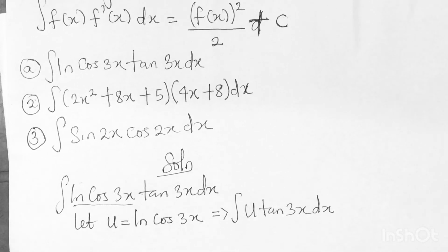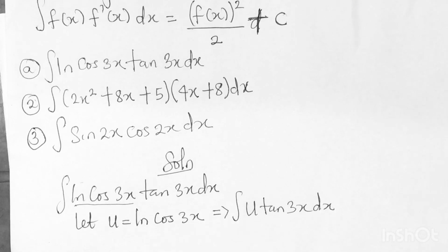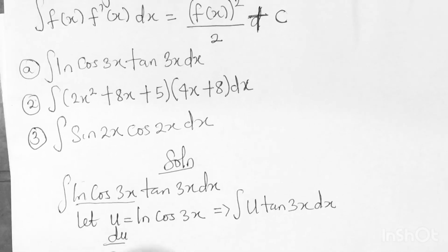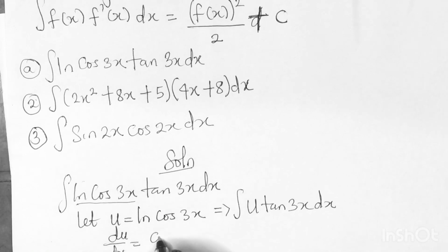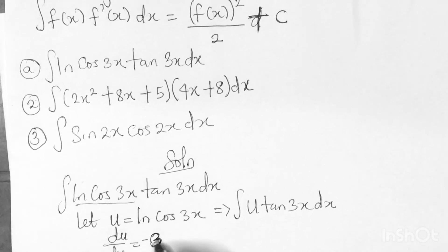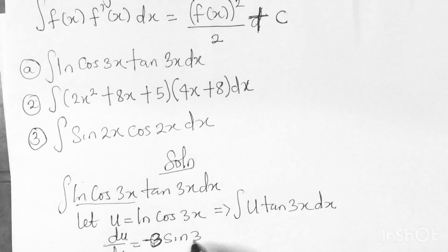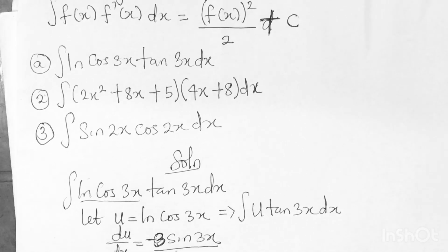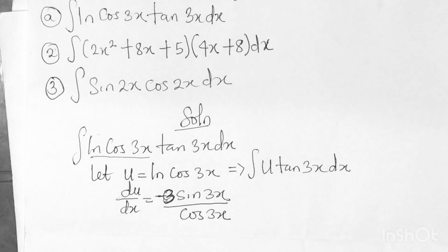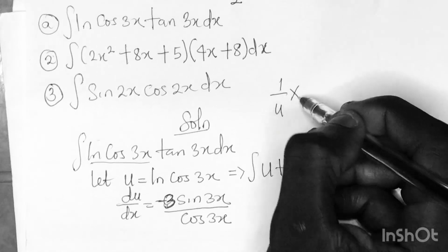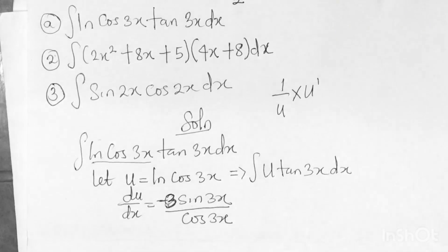Now we need to change dx into something involving du. If you differentiate u = ln(cos3x), you get du/dx equal to the derivative of cos3x over cos3x, which gives minus 3sin3x all over cos3x. That is 1/u multiplied by the derivative of u.